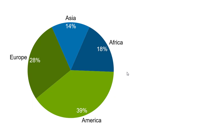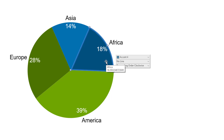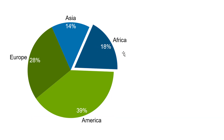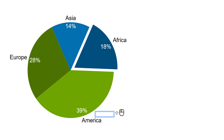You may also explode a slice of the pie chart to highlight it. Just click on the slice, drag the outer middle handle outwards, and release. To change the position of one of the outer series labels, hover over it, click on the drag handle, and drag it to the desired position.